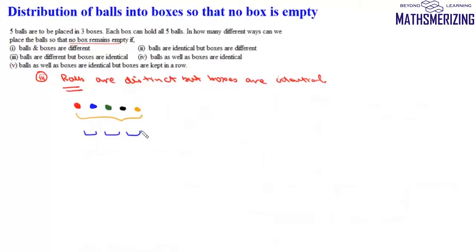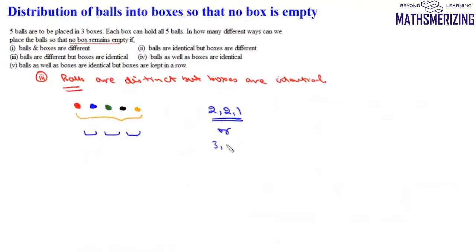In this question we already know that we can distribute five balls in three boxes so that no box is empty either in a 2-2-1 way, or we can distribute them in a 3-1-1 way.